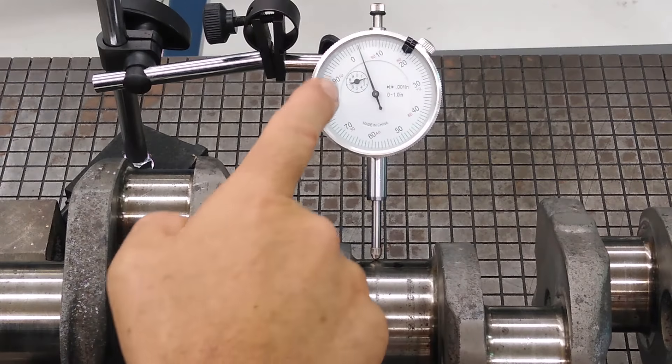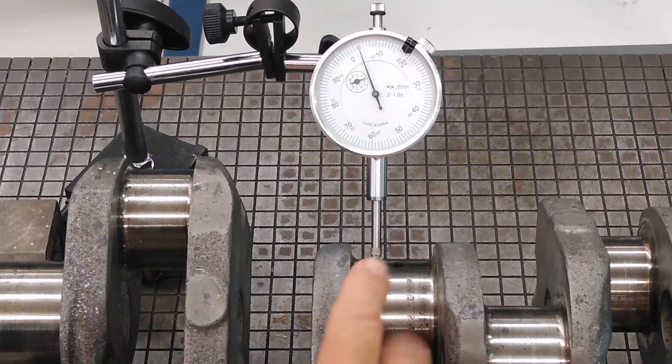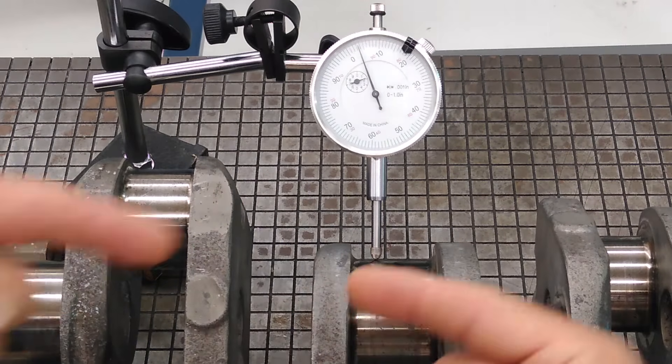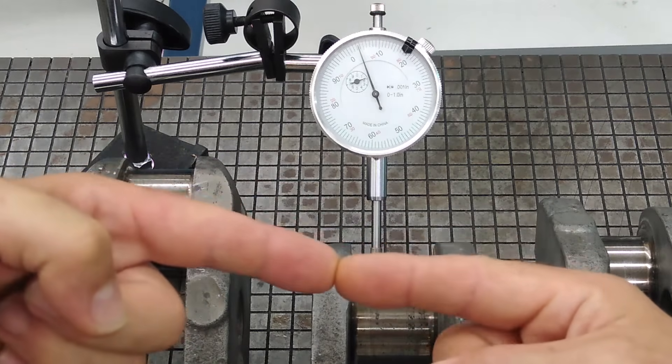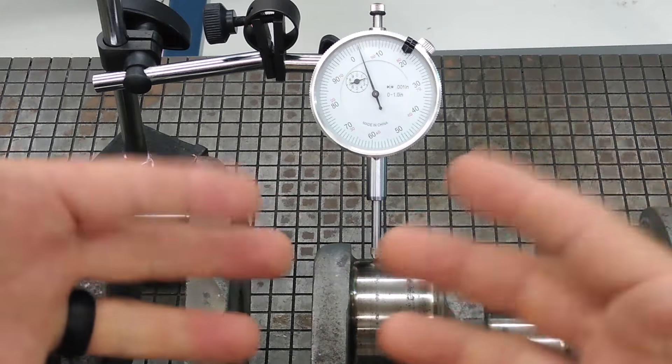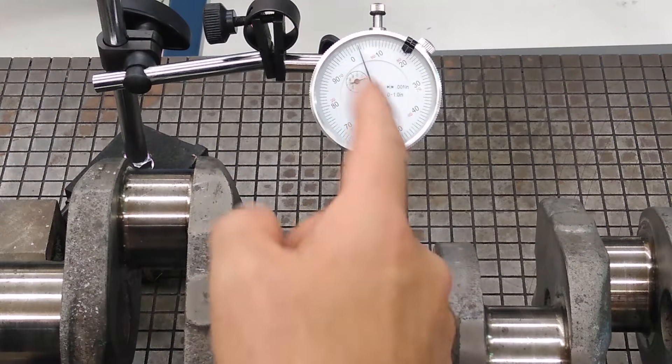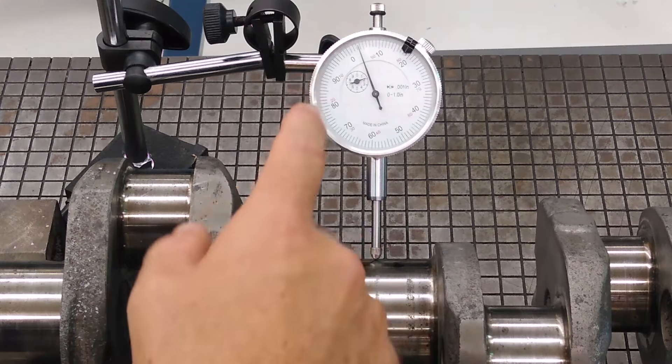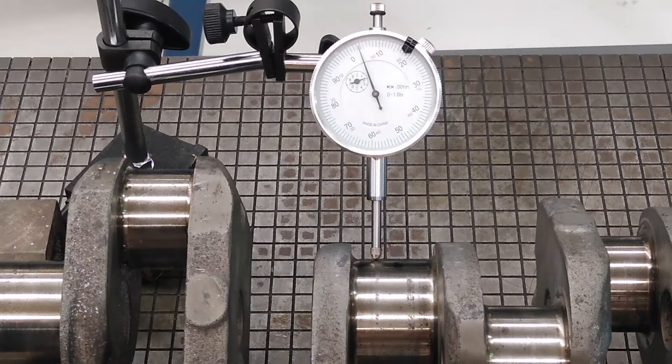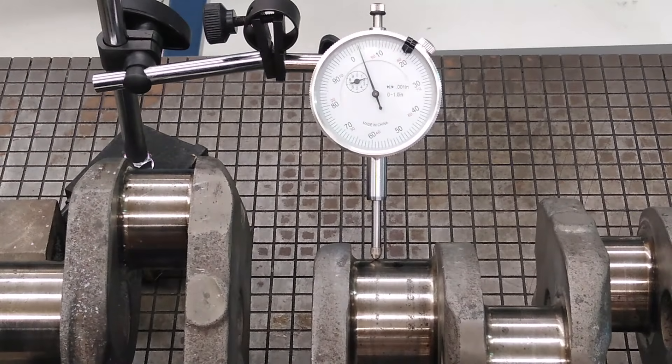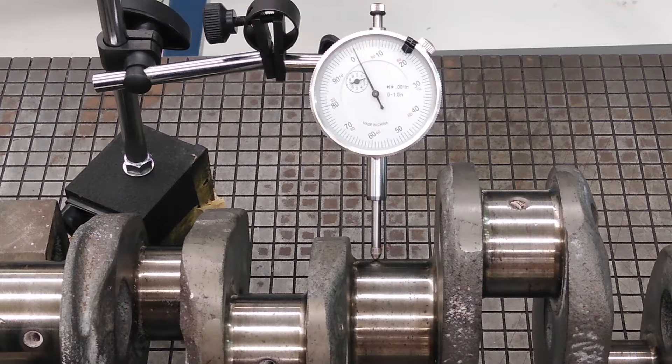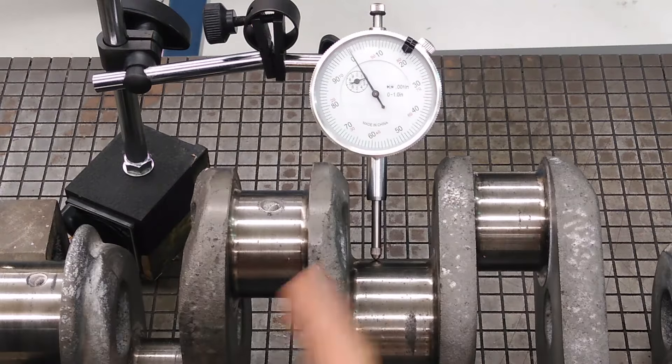Now we've moved on to measuring run out at the crankshaft bearing journal using a dial indicator. The dial indicator will give us a reading of any wobble in the crankshaft in this direction, meaning that the crankshaft is either bent or is within specs, within limits. You would start out with your dial indicator, zero it out, which I zeroed out before, but once you zero it out, you slowly spin the crankshaft and you take note of the lowest and highest readings you get out of that pointer.